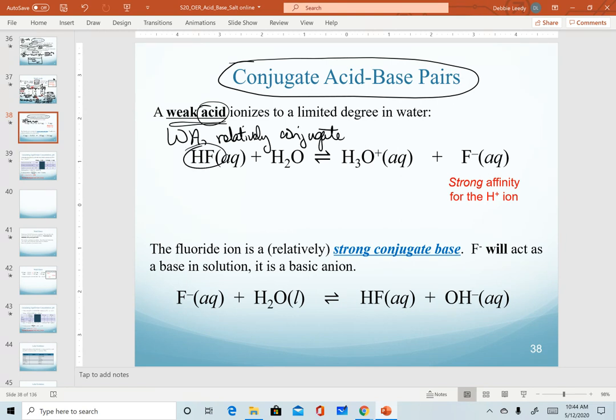Another example of a weak acid would be hydrofluoric acid reacting in water. So if HF reacts in water, we know HF is a weak acid. We know that because it's not strong, we'll dissociate into hydronium and fluoride. Since HF is a weak acid, fluoride is a relatively strong conjugate base.